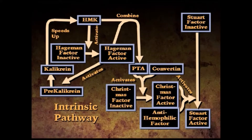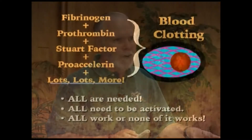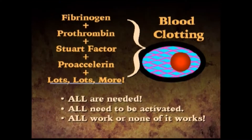If you eliminate one part, is the whole thing going to work? Some people say you can eliminate the hemophilic factor or the anion factor. But in the natural world, if somebody has that particular factor eliminated, they're not going to survive very long. All of these components are needed, plus many more. All need to be activated. All of it works, or none of it works. That is a mousetrap system — an irreducibly complex system.